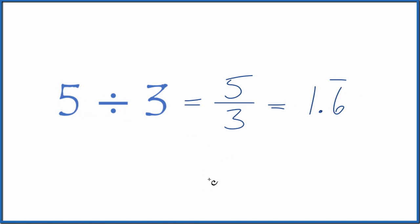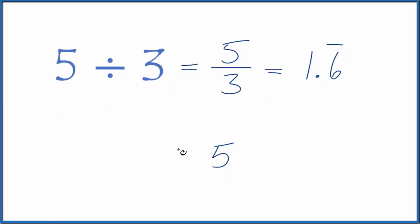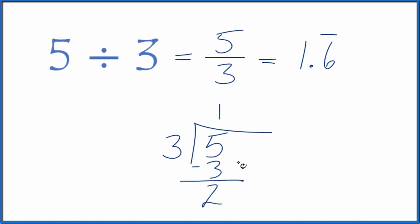We could also divide 5 by 3 longhand. So we could have 5 and see how many times 3 goes into 5. 3 goes into 5 one time. We subtract and we have 2. 3 doesn't go into 2. Let's put a decimal point here and call this 20.